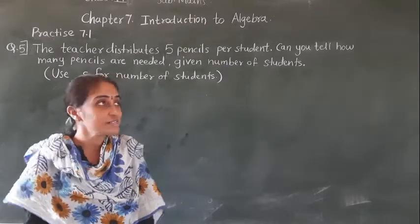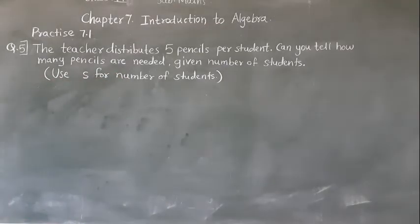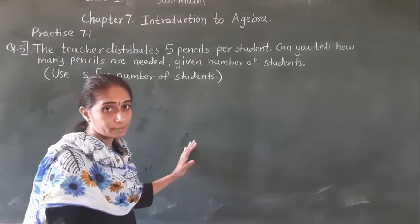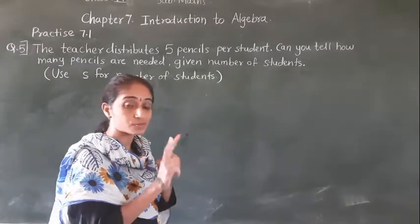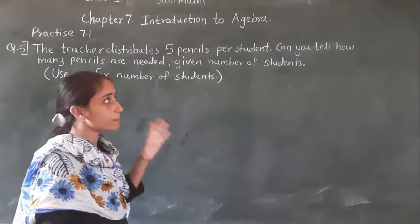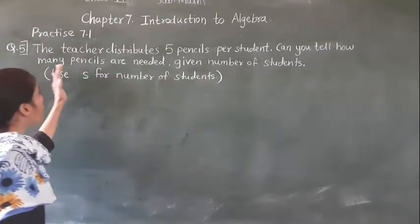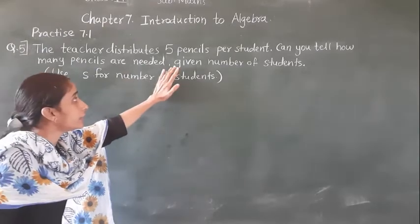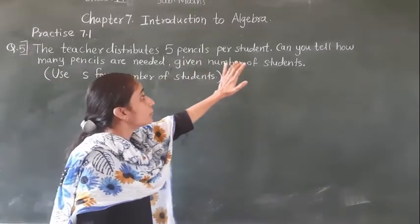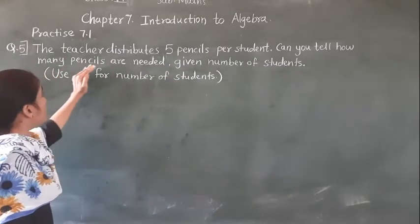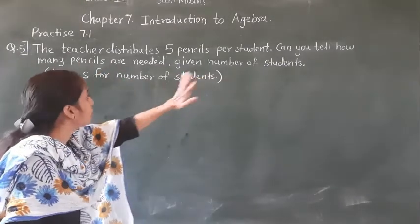Good morning students. Let's learn practice 7.1, question number 5. The teacher distributes 5 pencils per student — 5 pencils per student. For one student, 5 pencils are distributed. Can you tell how many pencils are given for a given number of students?